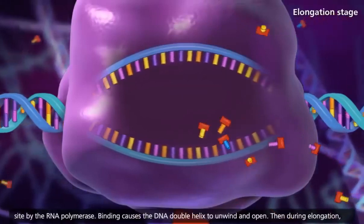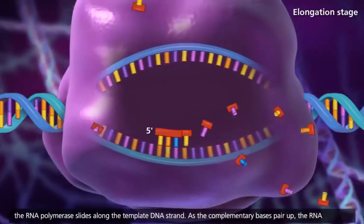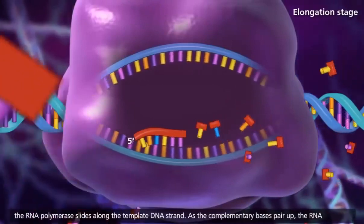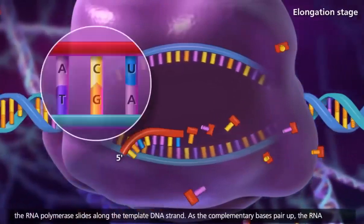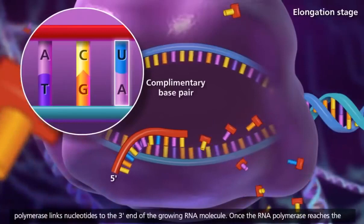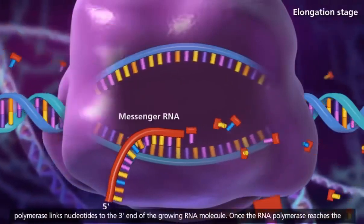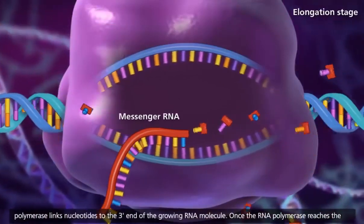Then during elongation, the RNA polymerase slides along the template DNA strand. As the complementary bases pair up, the RNA polymerase links nucleotides to the three-prime end of the growing RNA molecule.